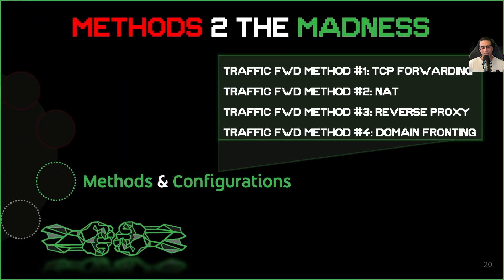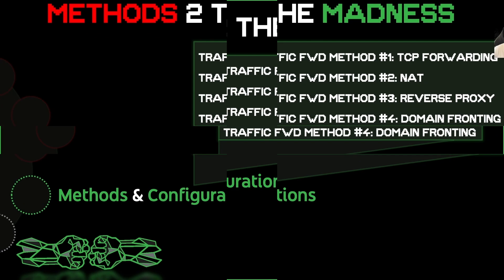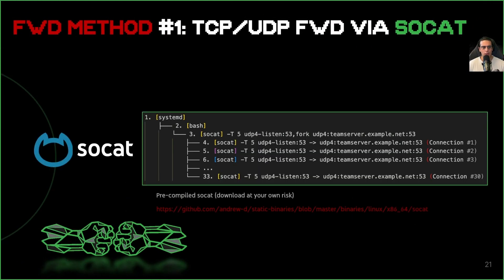We covered what redirection is in the context of a C2, then we moved on to what the components of a C2 redirector are. Now let's break down the common methods to achieve C2 redirection. First, we have TCP forwarder. We can use TCP and UDP with a program called SOCAT, which is a multi-purpose relay tool that helps establish bidirectional byte streams between two addresses. This Unix tool has been used since the dawn of times to connect multiple types of inputs and outputs — think of it as a netcat with a lot of life experience.